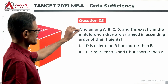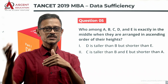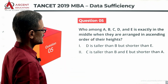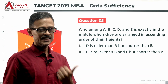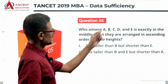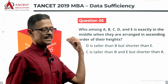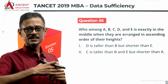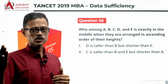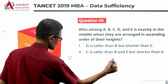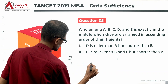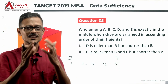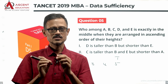The answer options follow the standard DS format. The question is: who among A, B, C, D, and E is exactly in the middle when they are arranged in ascending order of their heights — shortest to tallest? So we have five people arranged from position 1 to 5, and we need to find who is in the third place — the middle.